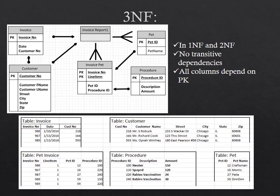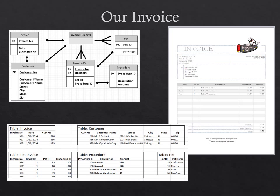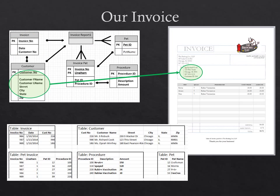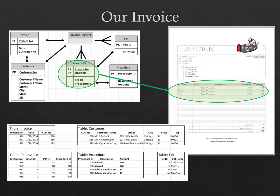Let's take a moment to return to our barking lot invoice. While the unnormalized view of our data would have worked to produce this invoice, our normalized data allows us to fill in each part of the invoice. You can see how data flows from the various tables in our database into a view or report, and you can see how we can utilize these values to calculate other fields in our invoice.